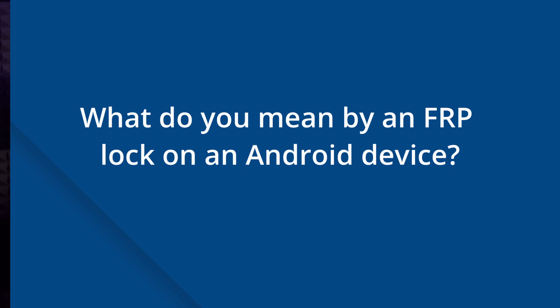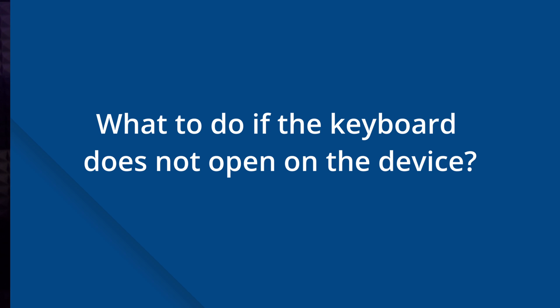Part two is the FAQ section. What is an FRP lock on an Android device? Factory Reset Protection (FRP) is a special security feature on Android devices running OS version 5.1 and above. Under this feature, you need a Google email address and password to factory reset the device. Without them, your device can get locked and you won't be able to access it.